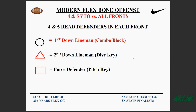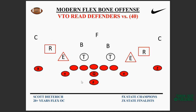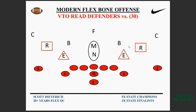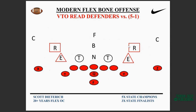Here's what it looks like against each front in diagram form. The circle in black is for blocking; red defenders are for read — dive and pitch. Against the 40 defense, whether we're running veer triple to the left or right, you can see who we're combo-blocking and who the dive and pitch keys are. Against the 3-3 defense, using our method of counting the middle stack, it shakes out to look a bit like a 4-2.